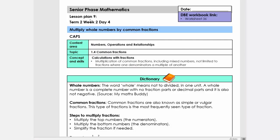Good day. Today we're going to do lesson plan number 9, Term 2, Grade 7. The topic is Multiply Whole Numbers by Common Fractions and it links to Worksheet 36 in the DBE book.